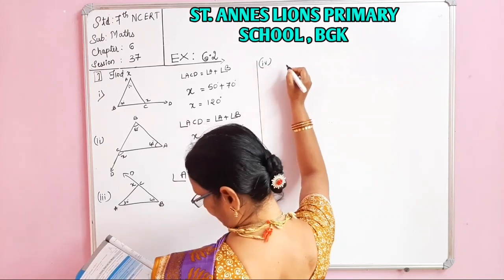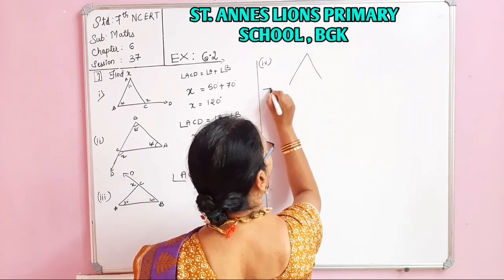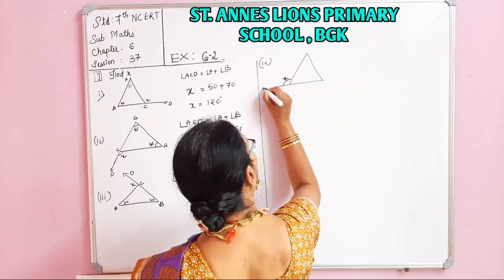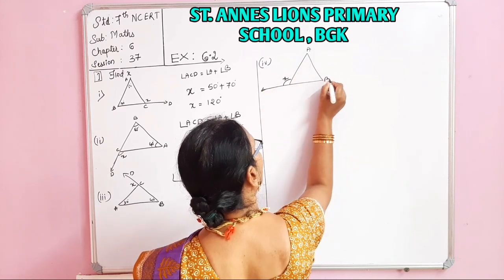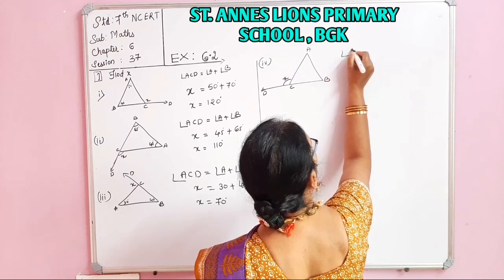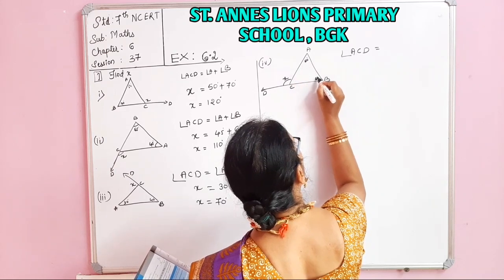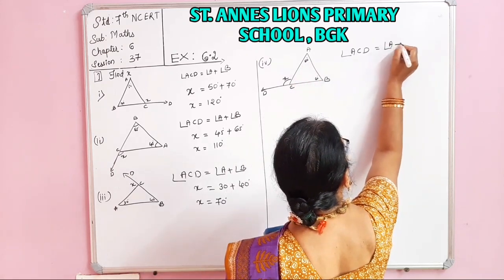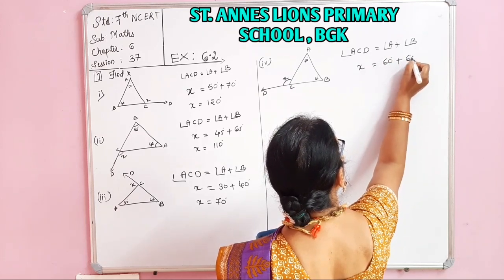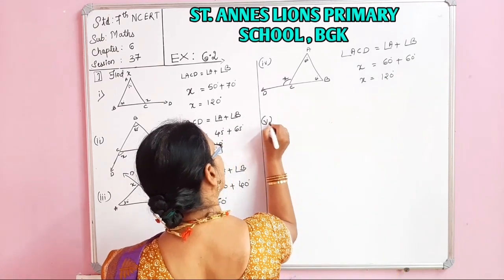Now the fourth one. We have points A, B, C and D. We have to find out X. Angle ACD is equal to Angle A plus Angle B. The measurements given are 60 and 60. ACD is X, Angle A is 60 plus Angle B is 60, so X is equal to 120 degrees.